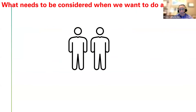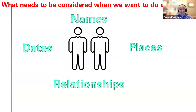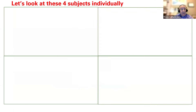What needs to be considered when we do a merge? There are four main things: names, dates, places, and relationships. You need to look at all four as you prepare to decide if two records need to be merged. Don't focus on just one of them, but try to focus on all four.